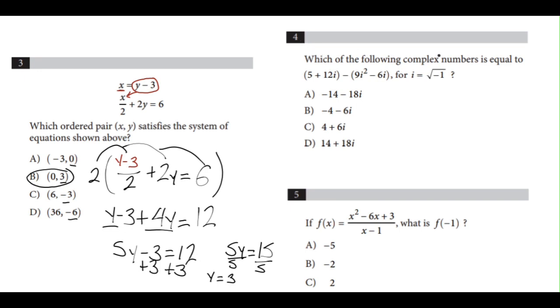Number 4, which of the following complex numbers is equal to 5 + 12i - (9i² - 6i)? The first step for number 4 is to distribute the negative in the middle of the parentheses. This will give us 5 + 12i - 9i² + 6i.